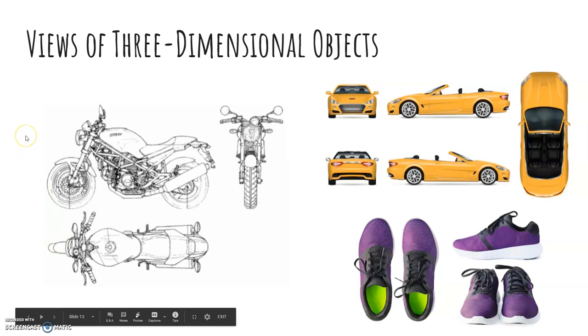So to begin, we've got a few different examples of everyday things. We've got a motorcycle, a car, and these purple shoes. As you can see, there are different views. There is a side view, a front view, and a top view. And when we look at 3D objects from different views, we are going to be able to see different things.